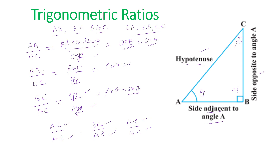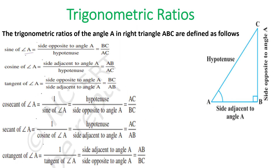AB upon BC is known as cot theta, or cotangent of angle A. AC upon AB is the reciprocal of cos — this is known as tan theta, or tangent of theta. AC upon BC is the reciprocal of sine. Now summarizing: sine of angle A is the side opposite to angle A upon hypotenuse, that is BC upon AC. The side opposite to angle A is also known as perpendicular, and the side adjacent to angle A is also known as base in old terminology.